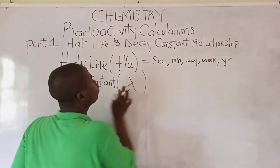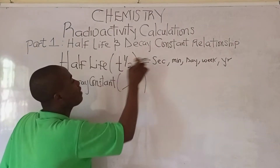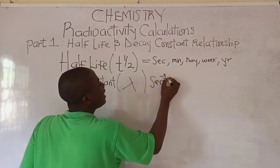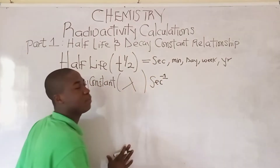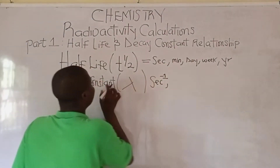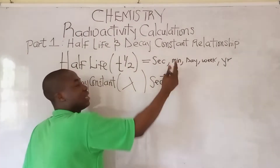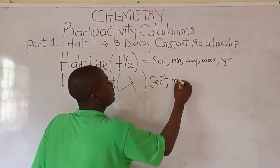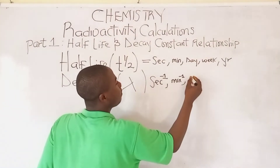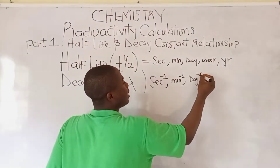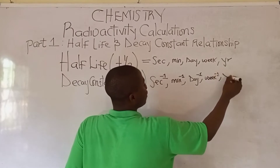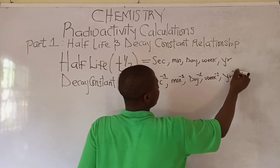This is what I mean: for the decay constant, if the half-life is given in seconds, the decay constant SI unit will be seconds raised to the power of minus 1. If the half-life is in minutes, it is minutes raised to the power of minus 1. Same applies to days — days to the power of minus 1; weeks — weeks to the power of minus 1; and years — years to the power of minus 1.